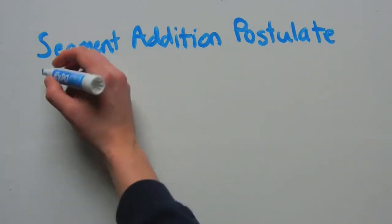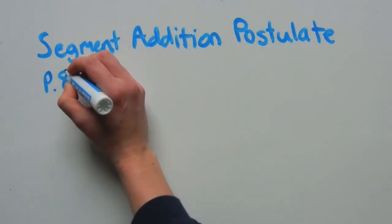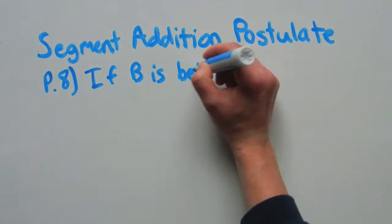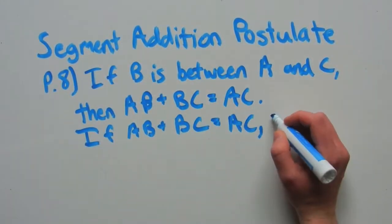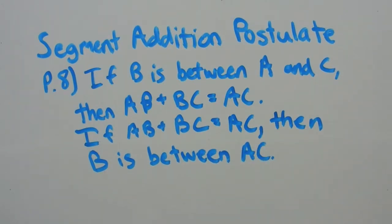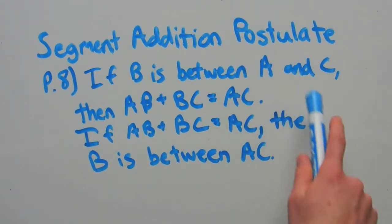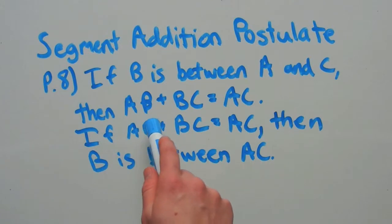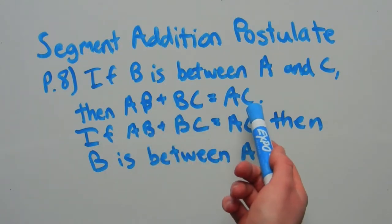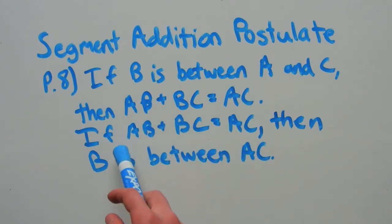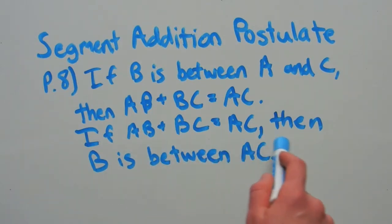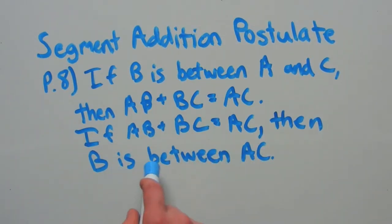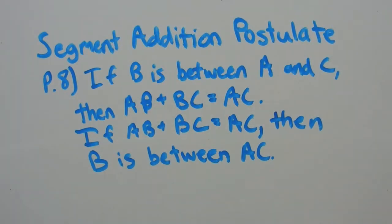The segment addition postulate, or P8, says that if B is between A and C, then AB plus BC equals AC. Also, if AB plus BC equals AC, then B is between A and C.